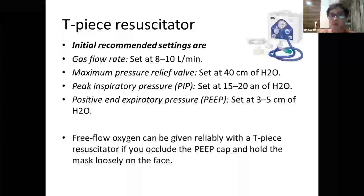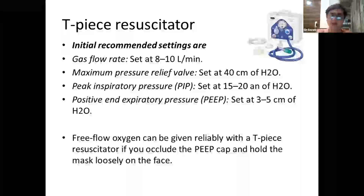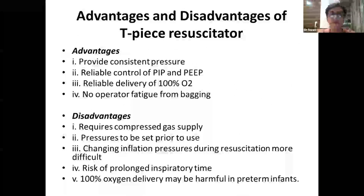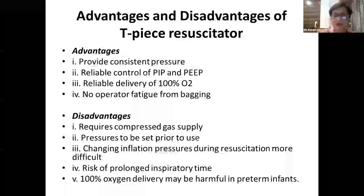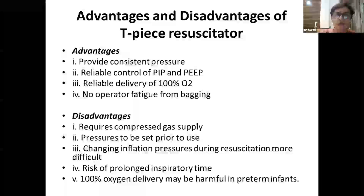For positive pressure ventilation, free flow oxygen can be given via the T-piece resuscitator by occluding the PEEP valve and holding the mask loosely on the face. Advantages include consistent pressure with reliable control of peak inspiratory pressure and PEEP. You can also give 100% oxygen and titrate it between 21 to 100% by connecting to a blender.